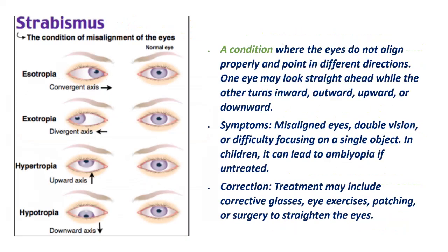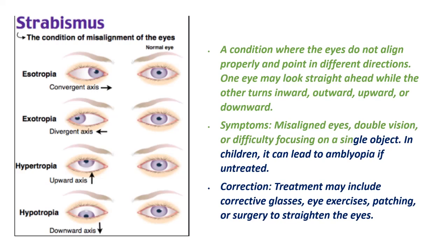Strabismus: A condition where the eyes do not align properly and point in different directions. One eye may look straight ahead while the other turns inward, outward, upward, or downward. Symptoms include misaligned eyes, double vision, or difficulty focusing on a single object. In children, it can lead to amblyopia if untreated. Treatment may include corrective glasses, eye exercises, patching, or surgery to straighten the eyes.